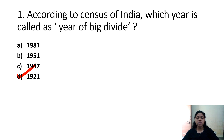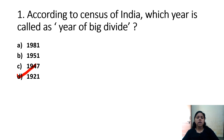In the 1921 census, the birth rate was recorded as a small number of people. The death rate was also declining for the first time in this census period. Because the death rate began to fall while birth rate remained, 1921 became known as the Year of Big Divide.